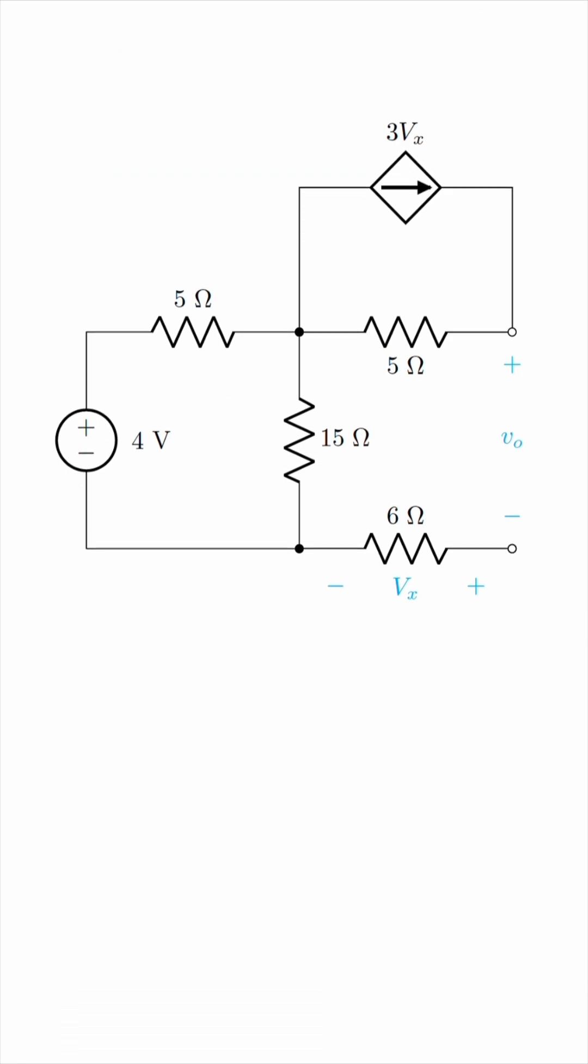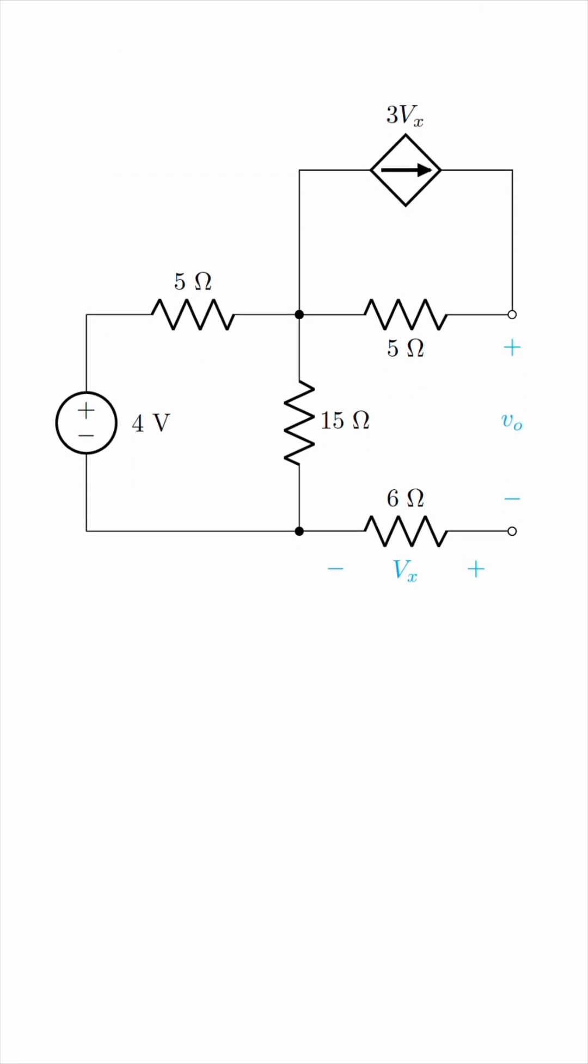Okay, so what do we have here? We have a relatively simple circuit, except that we have this voltage-controlled current source on the top with rating 3Vx. So the current this source gives is 3 times the voltage Vx, where Vx is labeled,